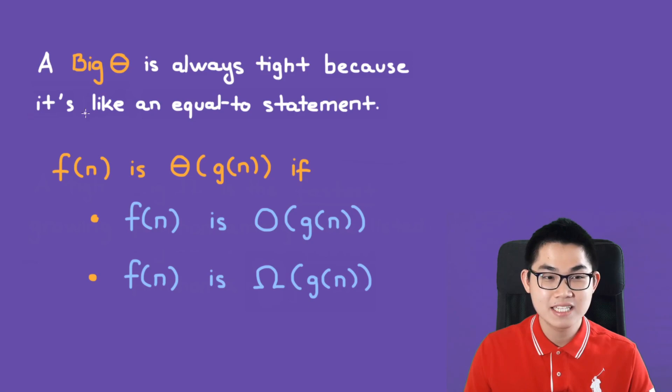And the last one is big theta. So big theta is actually always tight. It's always tight because it is like an equal to statement. So the formula for big theta is this: f(n) is big theta of g(n) if two conditions are met. The first condition is f(n) is big O of g(n), and the second condition is f(n) is big omega of g(n).